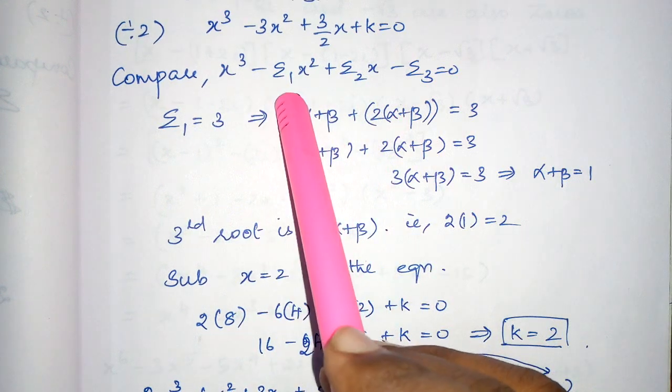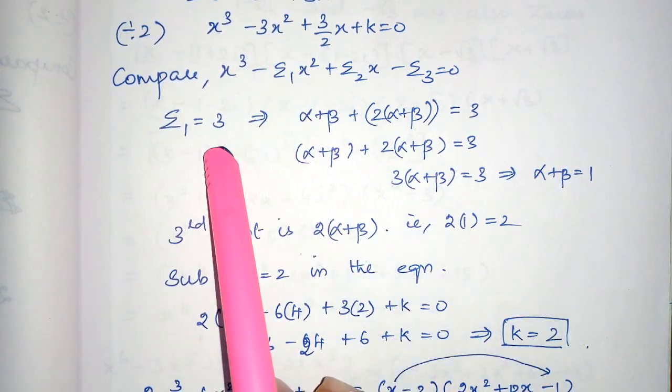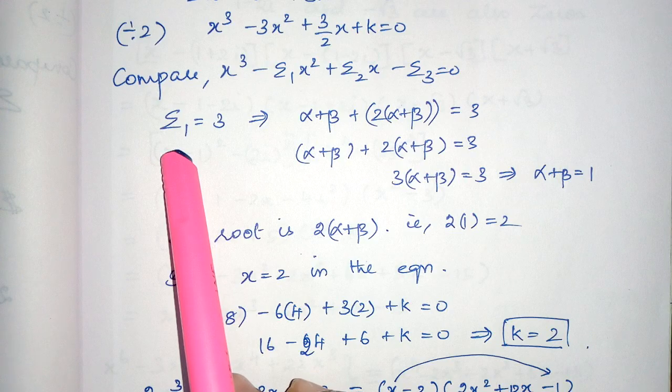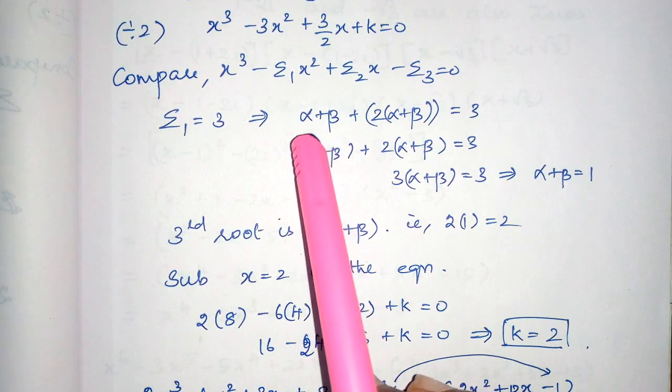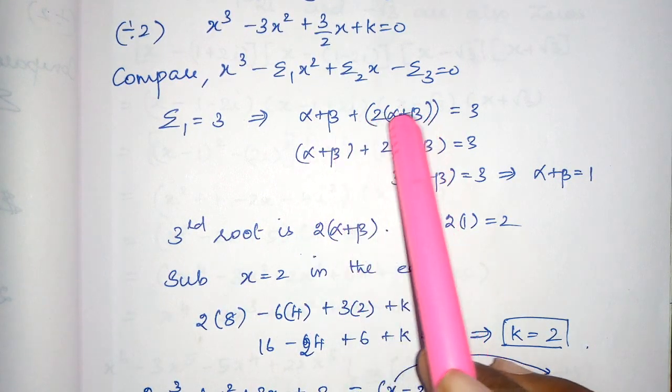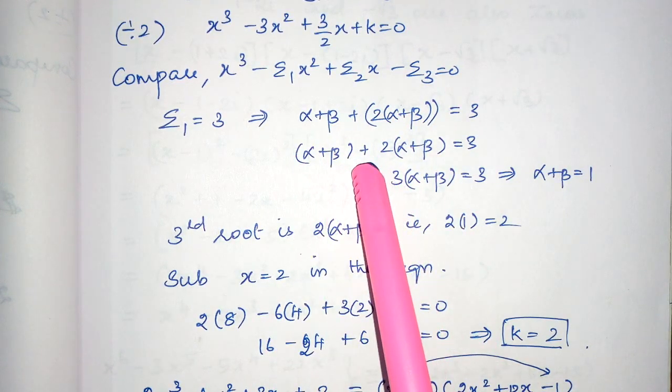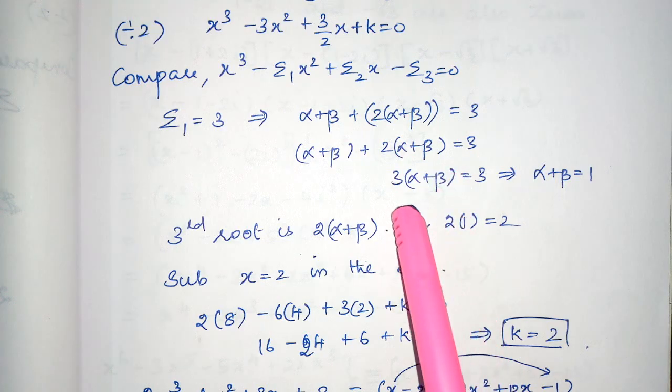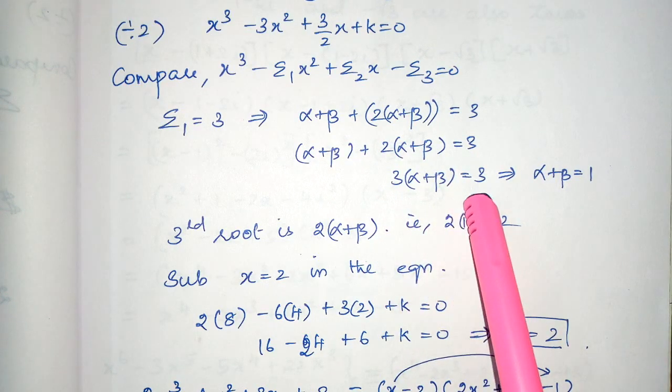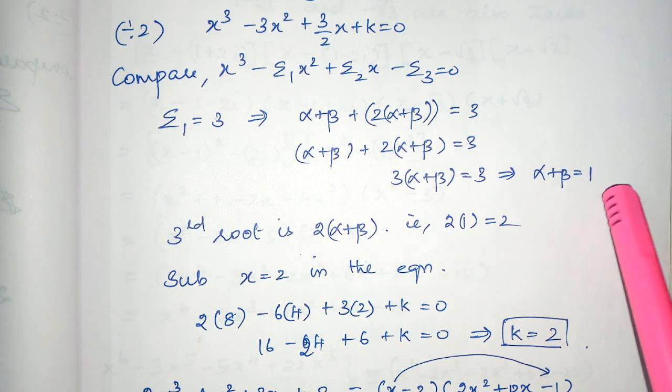Now, minus sigma 1 is equal to minus 3, so sigma 1 is equal to 3. Sigma 1 is nothing but sum of the roots. So, what are the roots? Alpha, beta, 2 into alpha plus beta. So, alpha plus beta plus 2 into alpha plus beta, it is totally 3 into alpha plus beta, which is equal to 3. 3 and 3 cancel. Alpha plus beta is equal to 1.